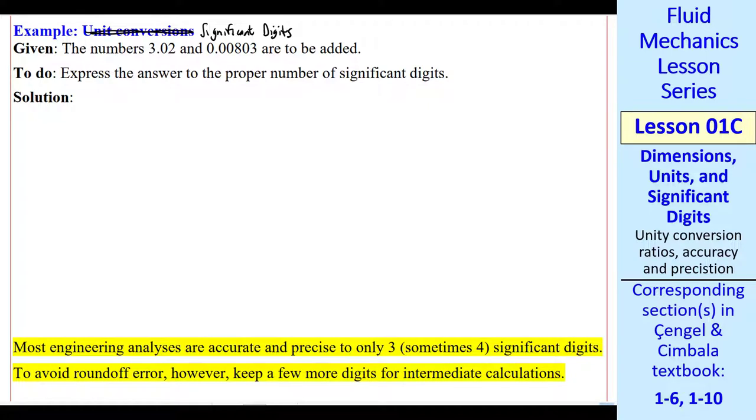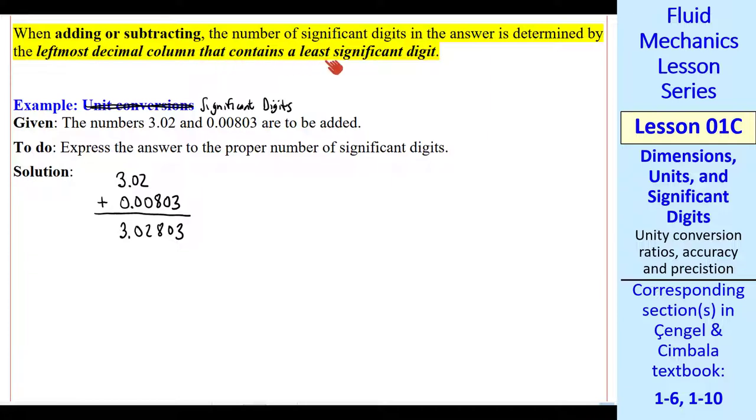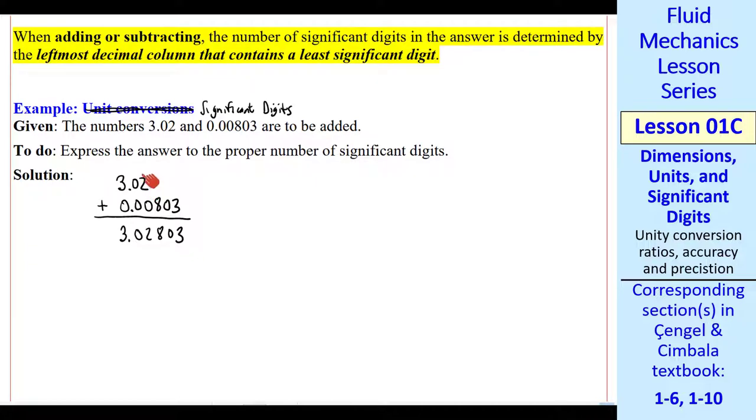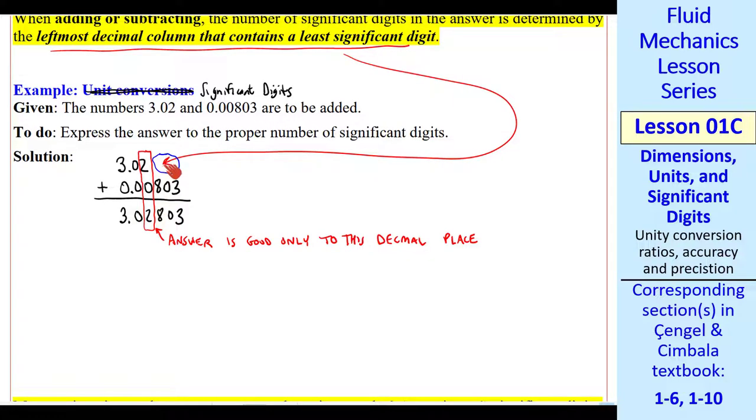Let's add the numbers 3.02 and 0.00803 and express the answer properly. What I do is align the decimal points, and you can do the simple addition. What is the leftmost decimal column that contains a least significant digit? Well, that would be this 3.02, and it would be the 2 column here. So our answer is good only to this decimal place, the second place after the decimal point. How do we know that? Well, there's nothing here. This could be a 2, 3, 8. This could be a 4, 2, 1. It would change the answer if we added those digits in. We have no way of knowing what those digits actually are. My final answer is 3.03 to 3 significant digits.